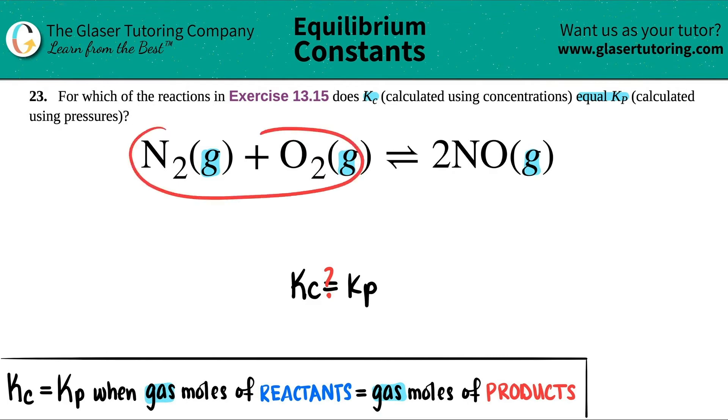The number of moles on the reactant side has to equal the number of moles on the product side. Use your coefficients. That's the number of moles. So in this case, I don't see any number here, so that just means that I have 1. Here is the same exact idea. I have 1.